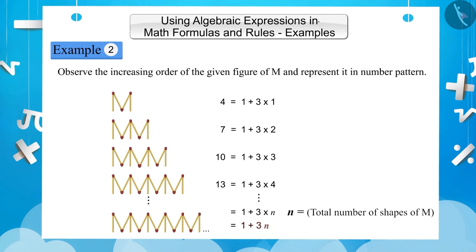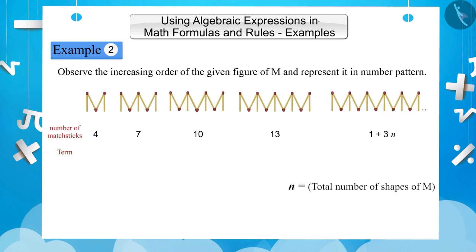With the help of this expression we can find the total number of matchsticks required to make n shapes of M. The number pattern of this M shape will be: 4, 7, 10, 13, and 1 + 3n, where the first term is 4, the second term is 7, the third term is 10, the fourth term is 13, and similarly the nth term will be 1 + 3n.